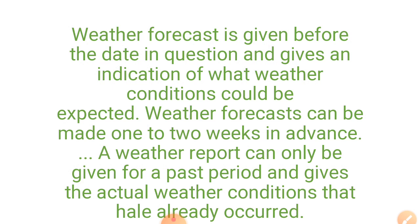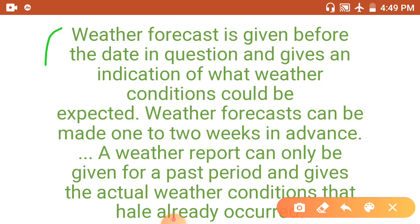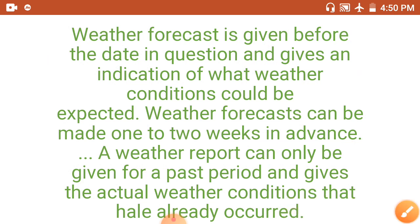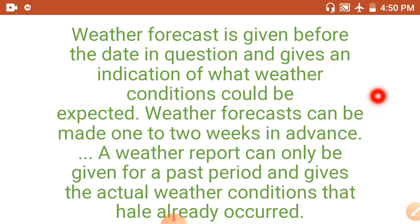What is the basic difference between a weather forecast and a weather report? The weather forecast is given before the date in question and provides an indication of what weather conditions could be expected. A weather forecast can be made one day to weeks in advance. Weather reports can only be given for a past period and give the actual weather conditions that have already occurred, containing information about the weather of that day.